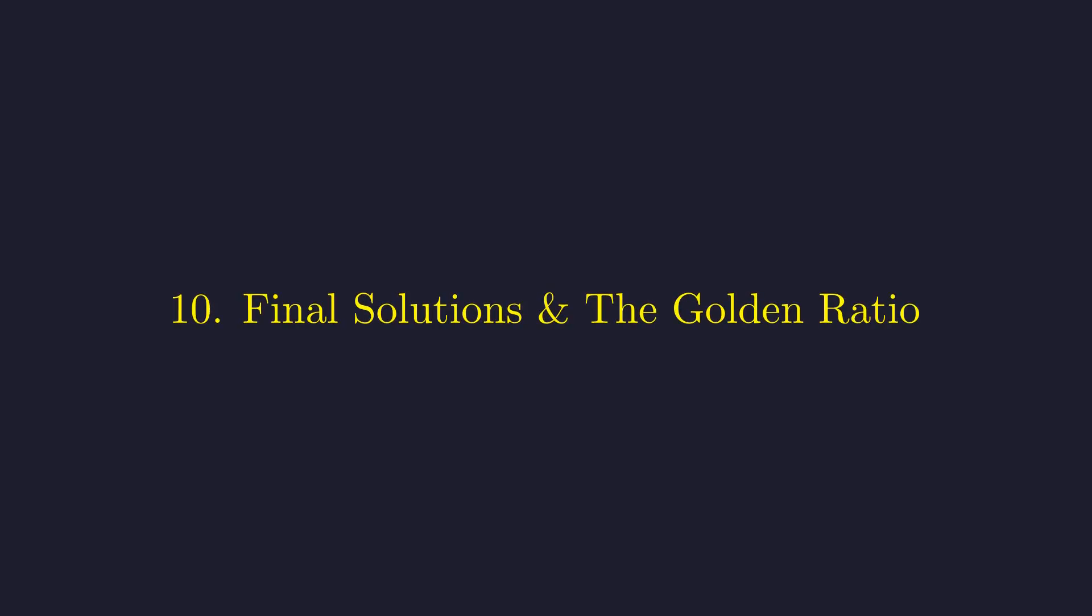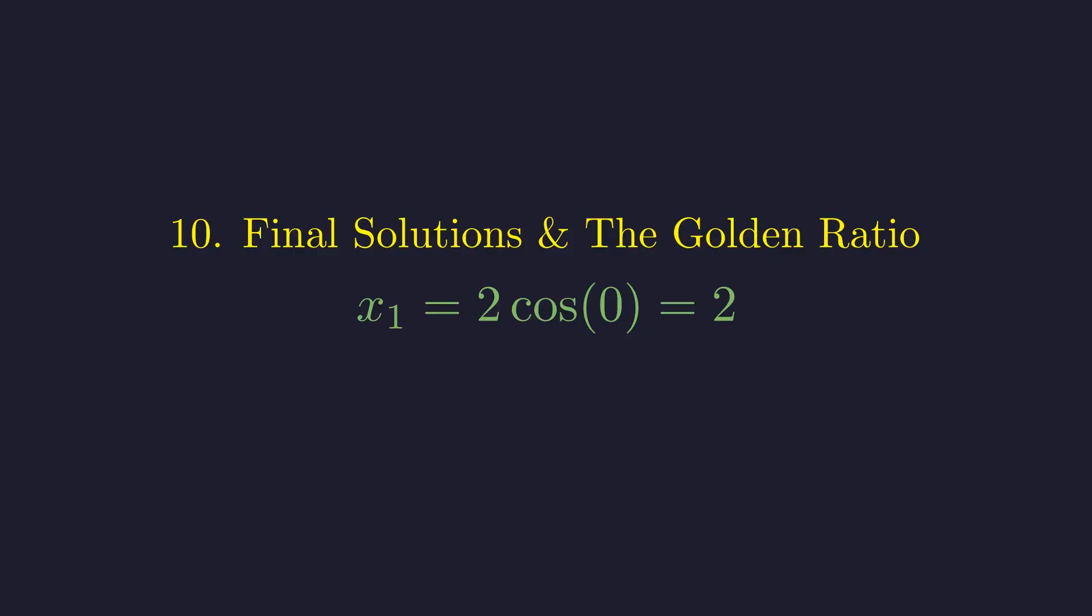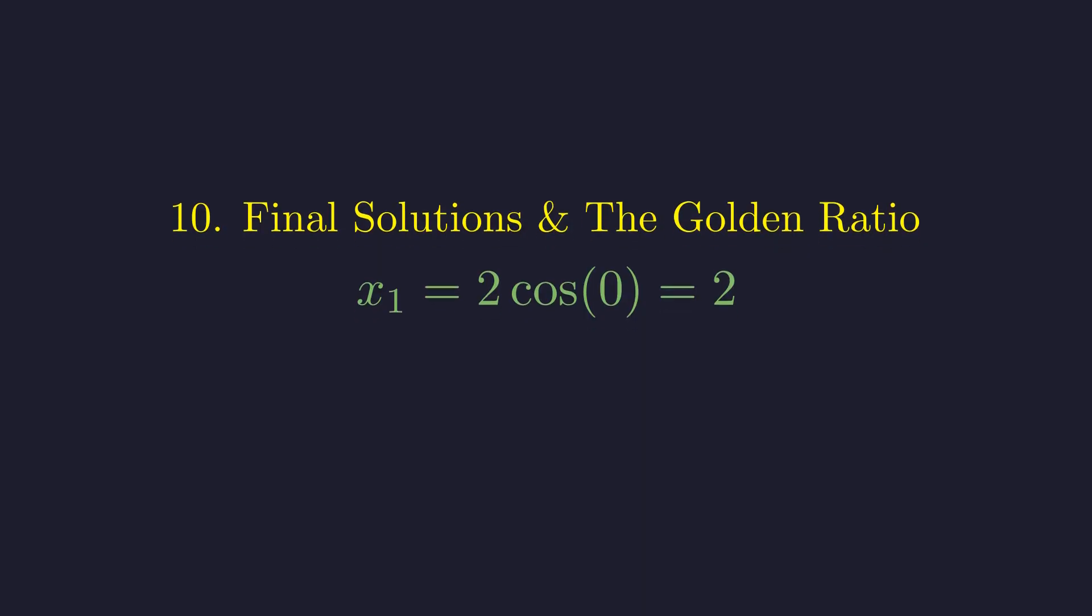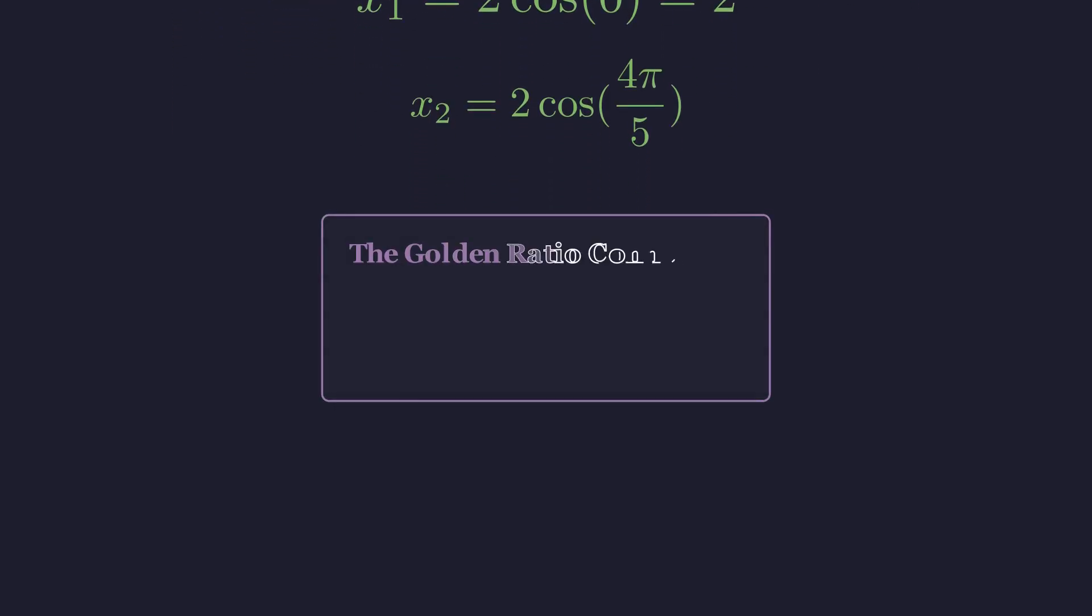Now, let's convert these back to x values. Theta equals 0 gives x equals 2 cosine of 0, which is just 2. The second solution is 2 cosine of 4 pi over 5. And this is where things get beautiful. It turns out that cosine of 4 pi over 5, which comes from the geometry of regular pentagons, equals negative 1 plus the square root of 5, all over 4.